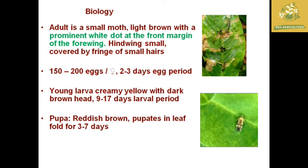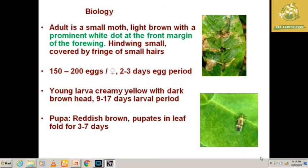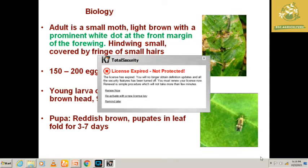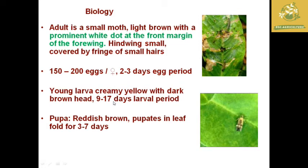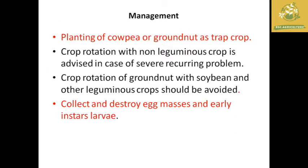Regarding the biology: the adult is a small moth with a prominent white dot on the front margin of the wings. The female lays around 150 to 200 eggs per female, with an egg period of around two to three days. The larva is creamy yellow with a dark brown head, with a larval period of 9 to 17 days. The pupa is reddish brown and pupates in a leaf fold for three to seven days.